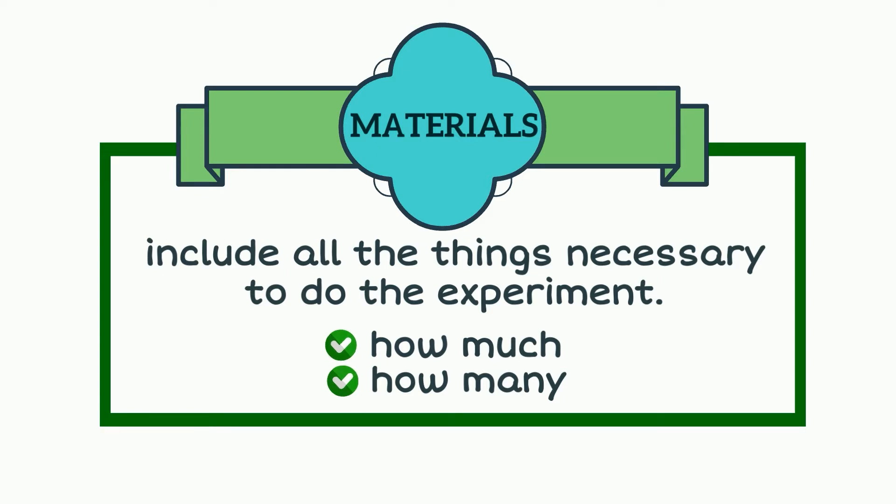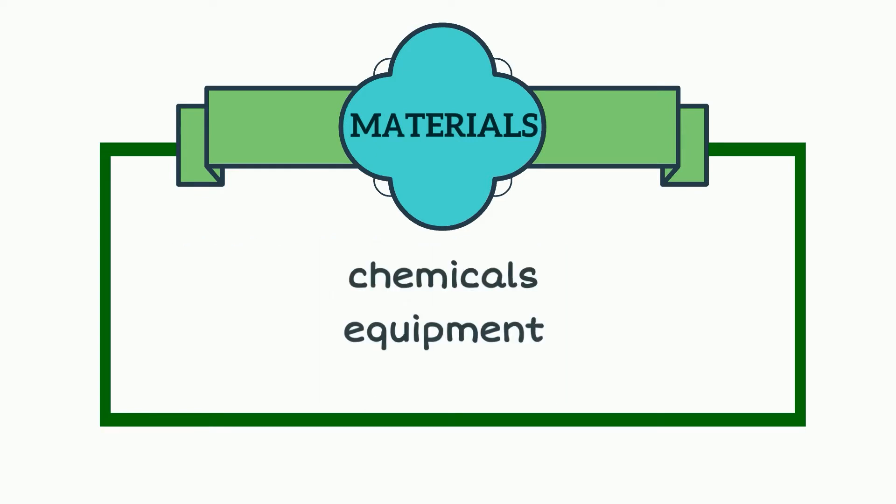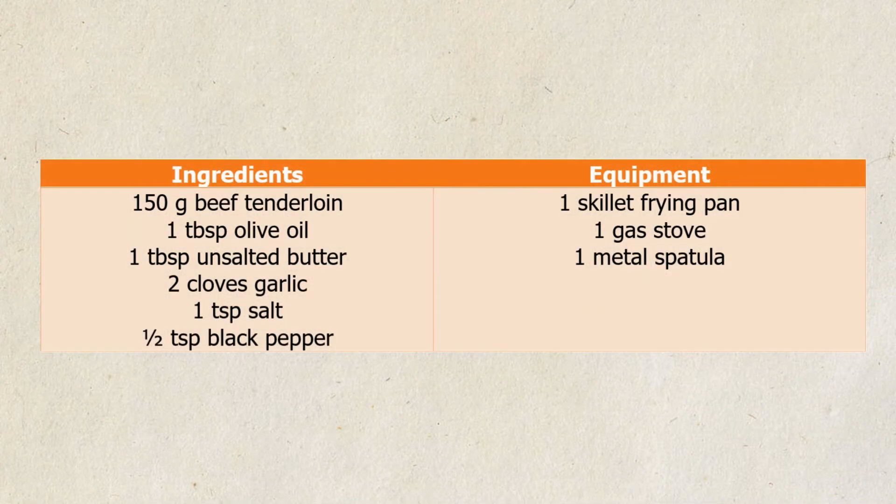The list is often divided into two, chemicals and equipment, or in other words, consumables and non-consumables. In our cooking procedure, materials could be listed this way. Notice that the amount of ingredients is indicated and the number of equipment is also specified.